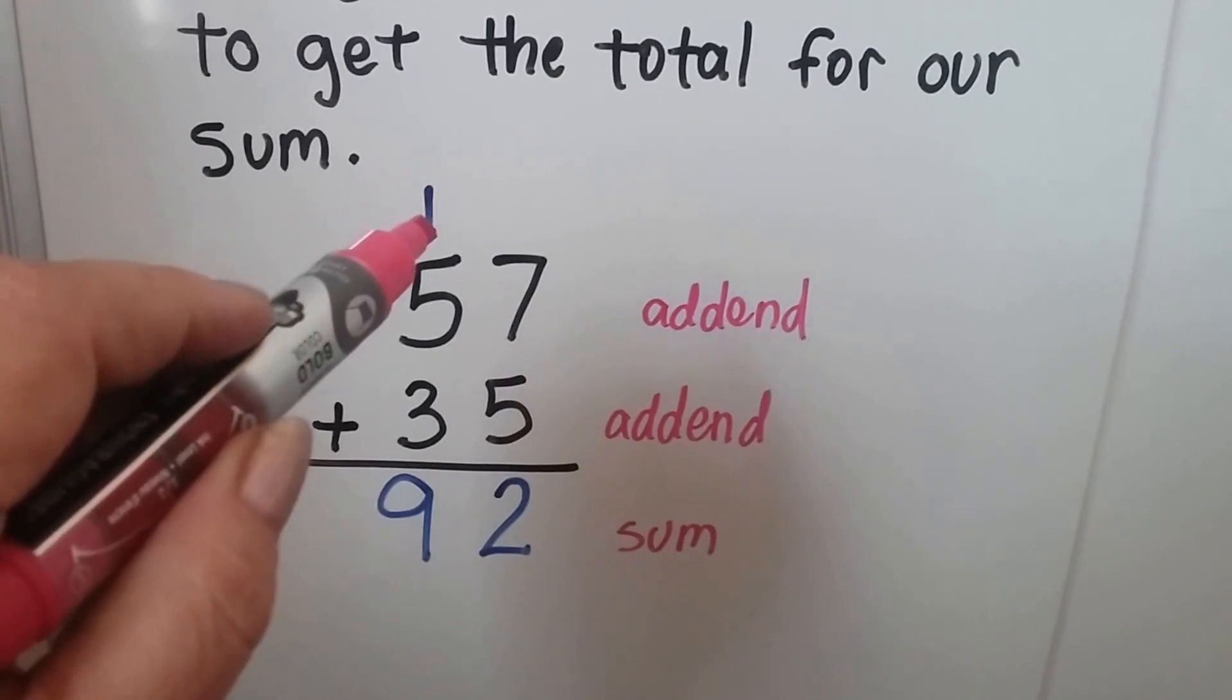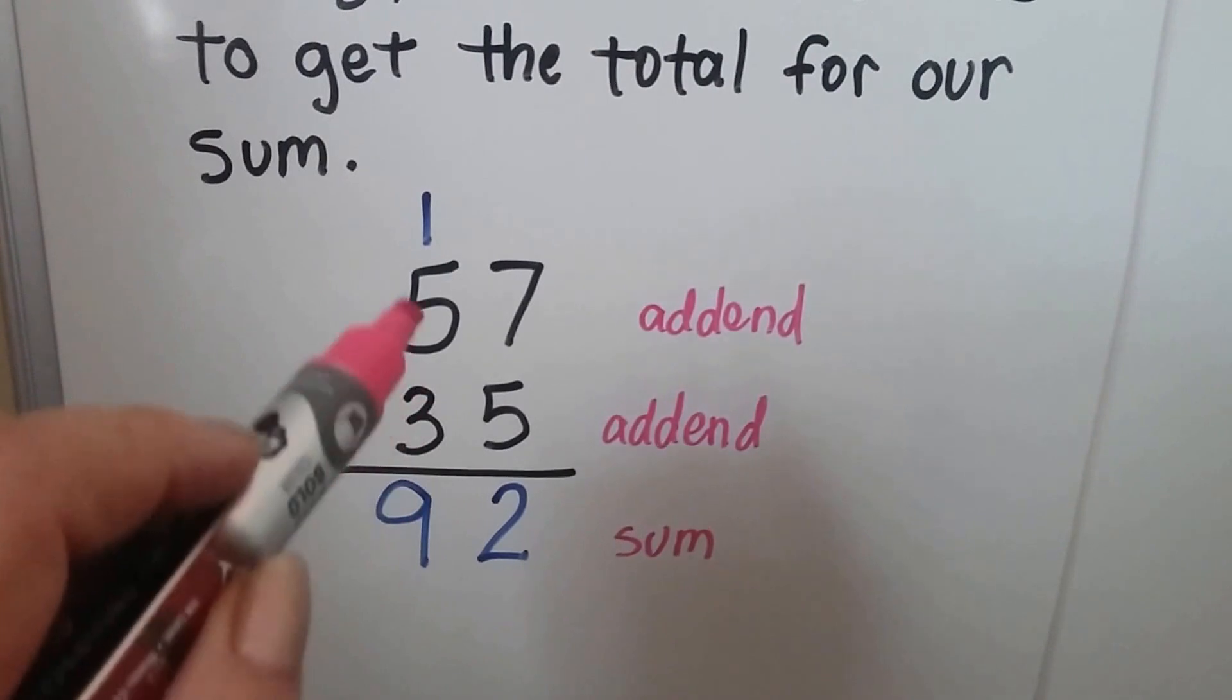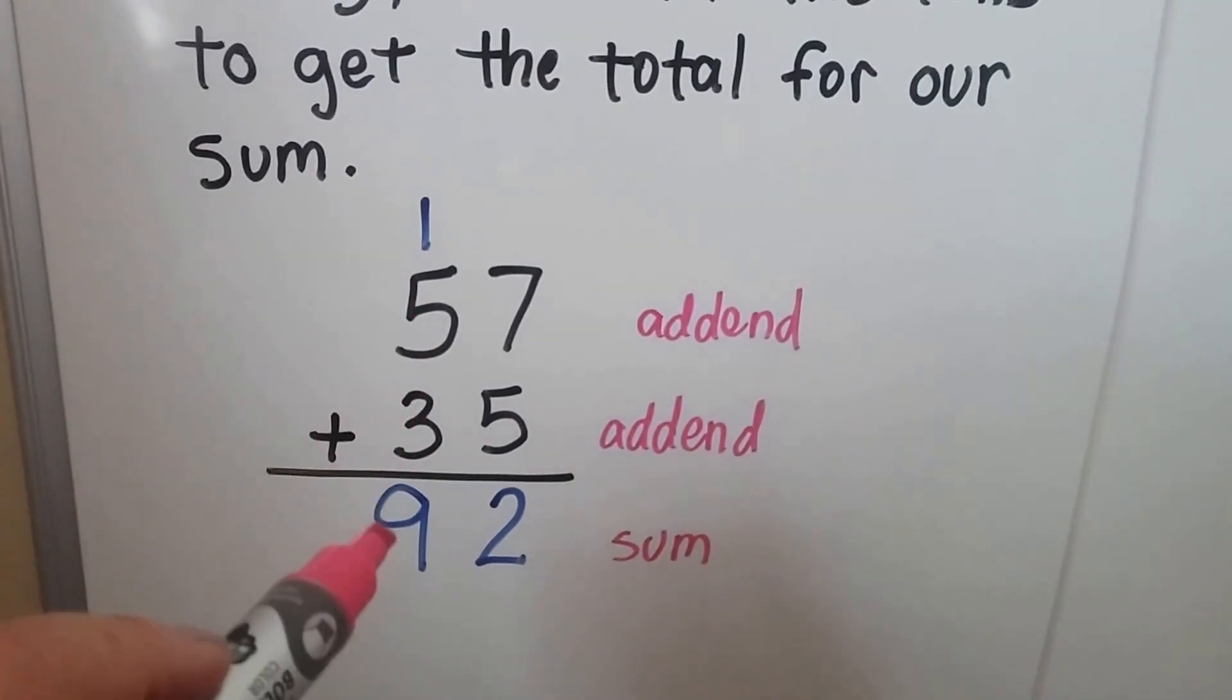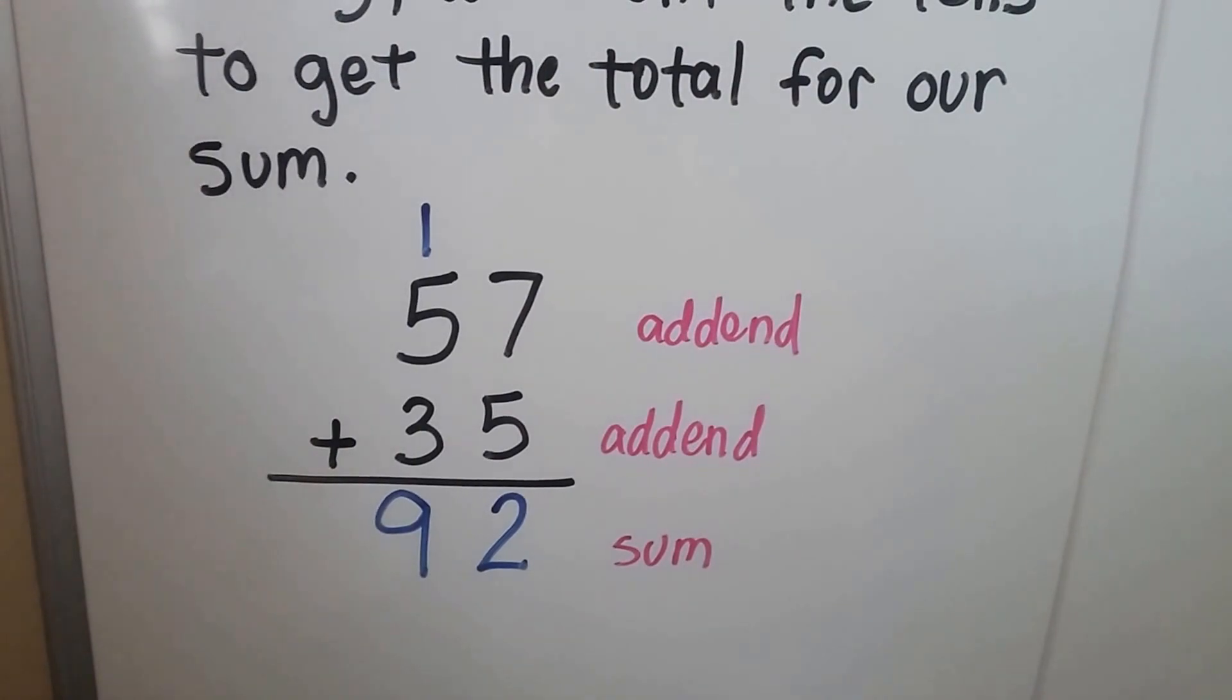We regroup the 1 from the 12 up here. We put the 2 down here for the sum. And we count the tens: 5, 6, 7, 8, 9, 92. 57 plus 35 is equal to 92.